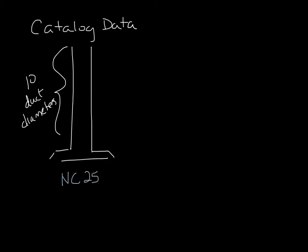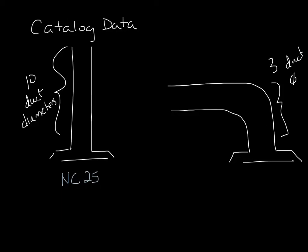The best installation would have 3 equivalent duct diameters going into the inlet with a 90 degree radius of flex duct. Even this installation will add 1 NC over catalog data. So in this installation, our NC25 catalog diffuser would actually sound like NC26 installed.